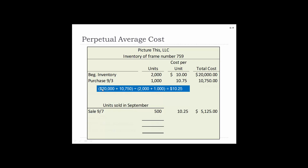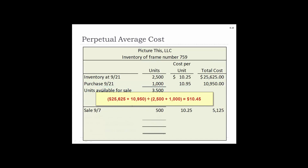Accounting for frame number 759 using perpetual average cost: at the beginning they had 2,000 units at $10, so $20,000. Then purchased on 9-3 another 1,000 units at $10.75. Total cost is $30,750 divided by 3,000 units. So every time they purchase, they recalculate the average cost. The average cost based on 3,000 units when they sold on 9-7 was $10.25. So 500 units times $10.25 equals $5,125 cost of goods sold. With 3,000 units on hand minus 500 sold, we have 2,500 remaining units at $10.25.